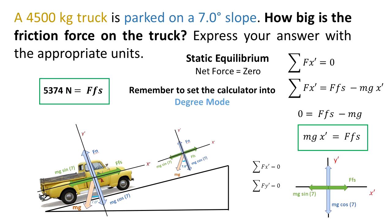And we see that there is a component of the gravity, that's the Mg x', that's the sine, that's trying to pull the truck down the ramp. But the static friction force counteracts that action of gravity and allows the truck to stay put.